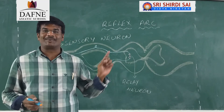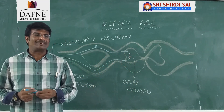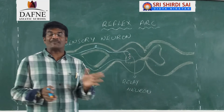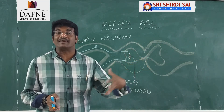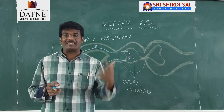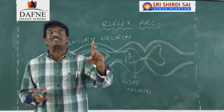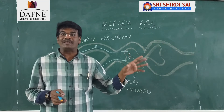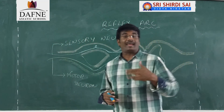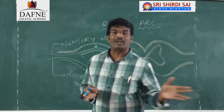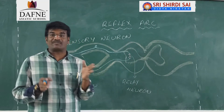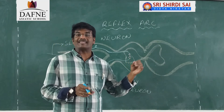Welcome back to the second part of the session. In our previous session we discussed that there are some particular activities for which a stimulus is required and an immediate response is given. There are two types of involuntary functions: one type does not require any particular stimulus, like the heartbeat, and another type does require a stimulus, which can be termed reflex actions.